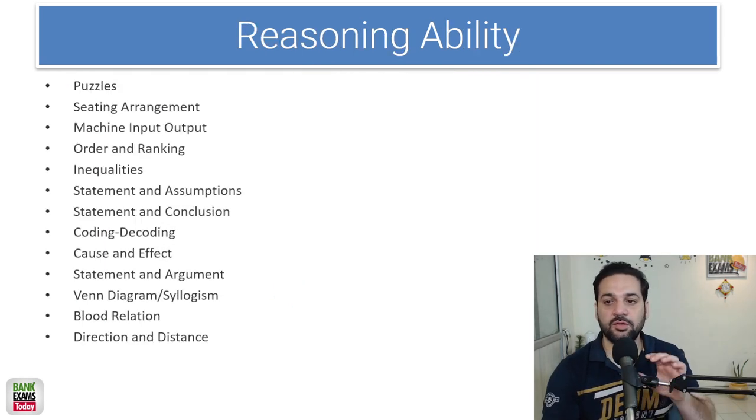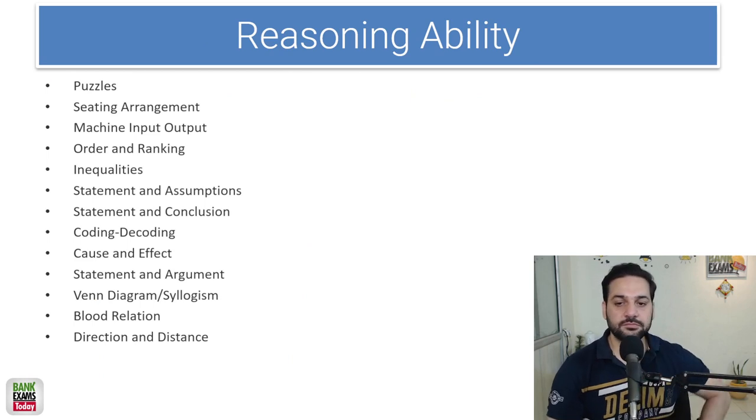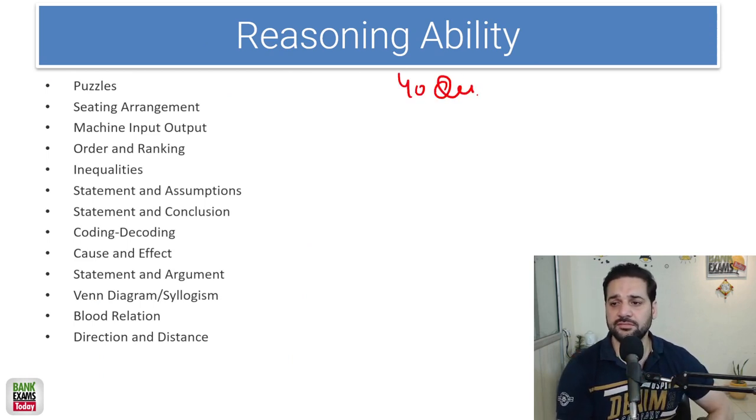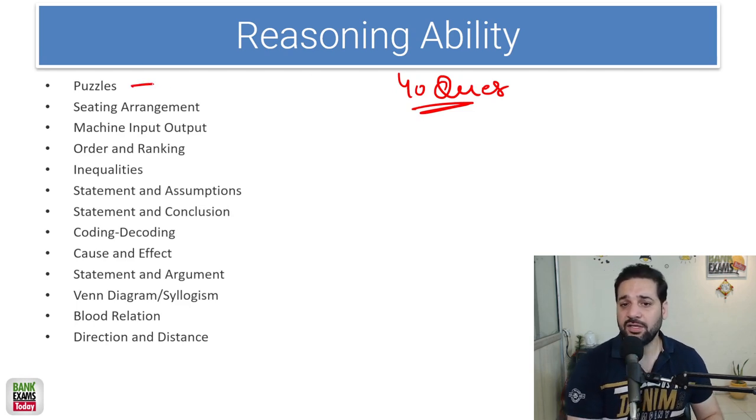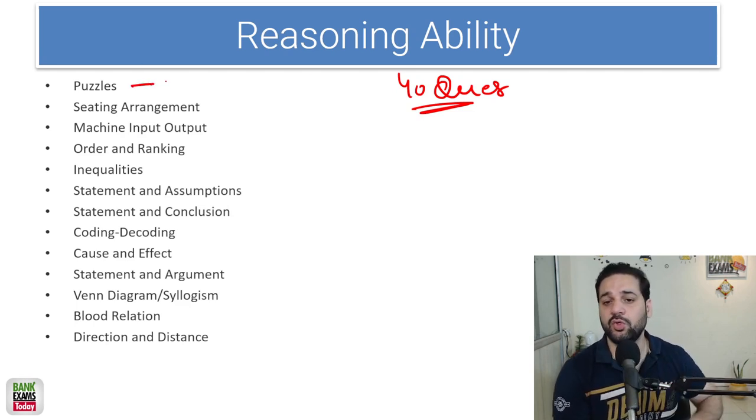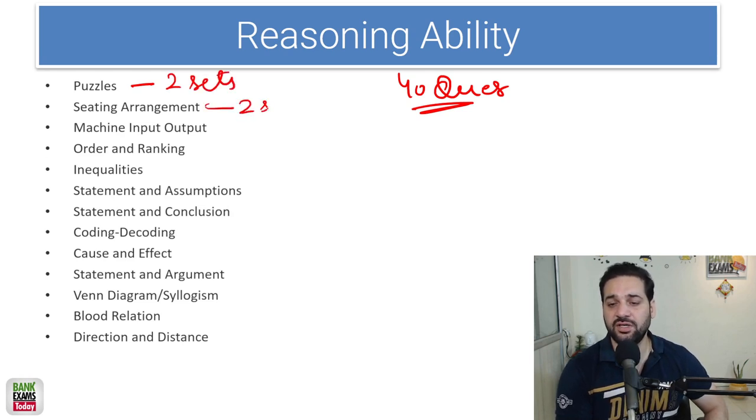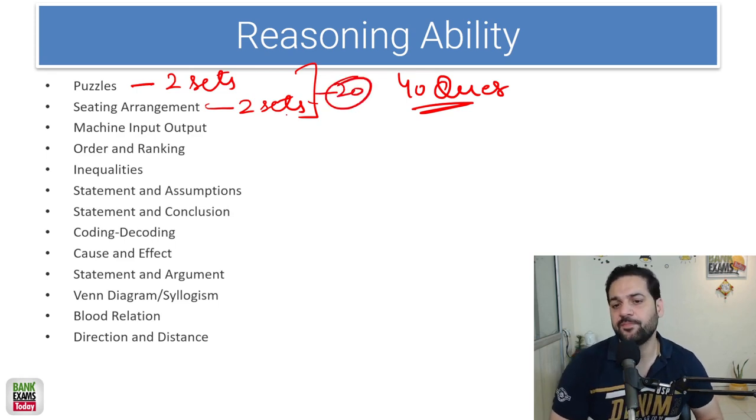Let's move forward to the reasoning ability section. See students, 40 questions are there. You can expect 2 sets of puzzles, 2 sets of puzzles and then you can expect 2 sets of seating arrangements. So total 20 questions you can expect from puzzles and seating arrangements.